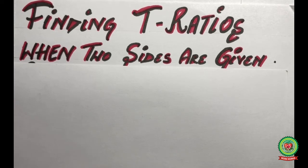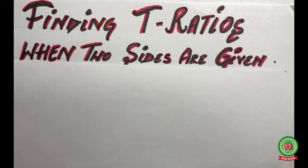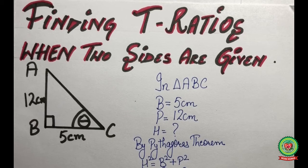For finding the trig ratios, we need all three sides of a right angle triangle. Since we will be given two sides, our first step will be to find the third side of the right angle triangle by applying the Pythagorean theorem, and then we are going to find all the six trig ratios from there.